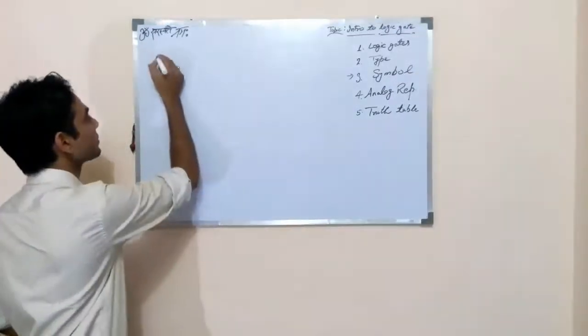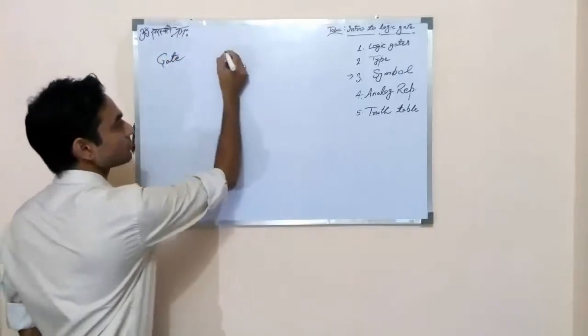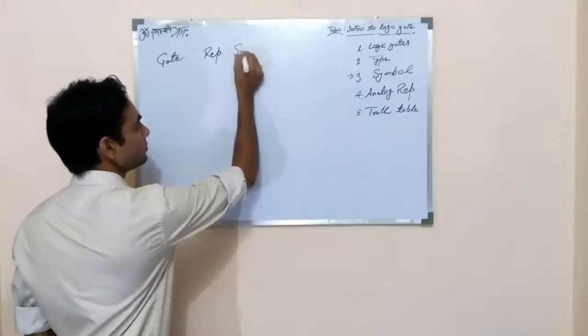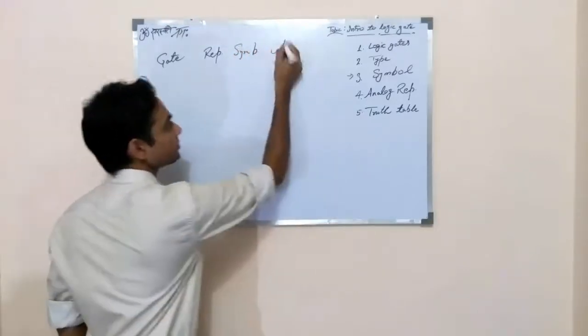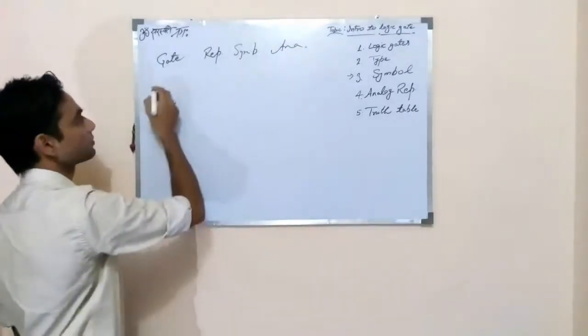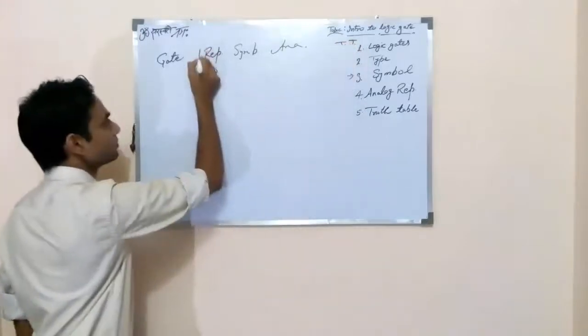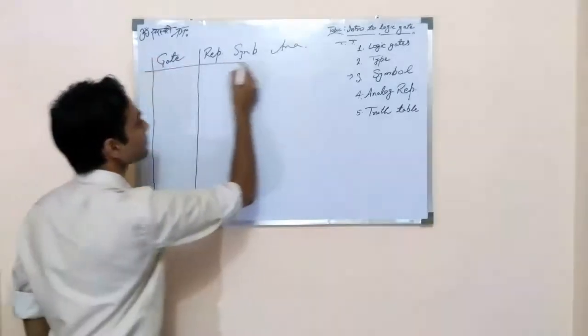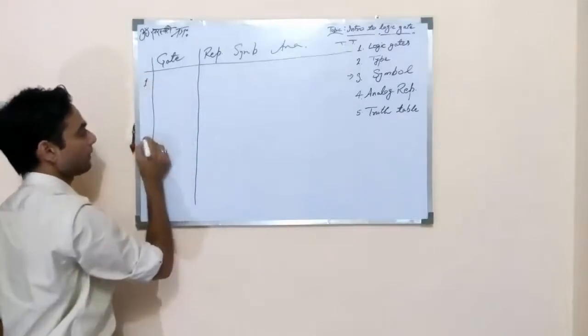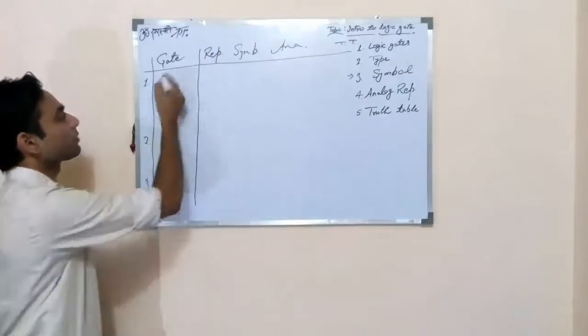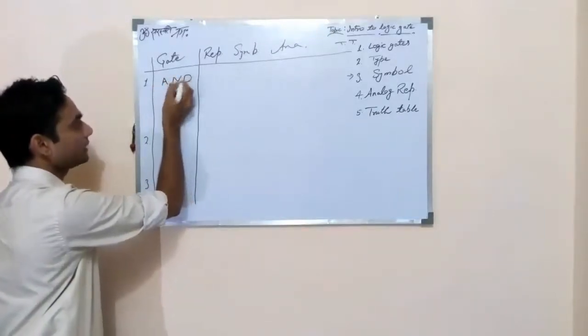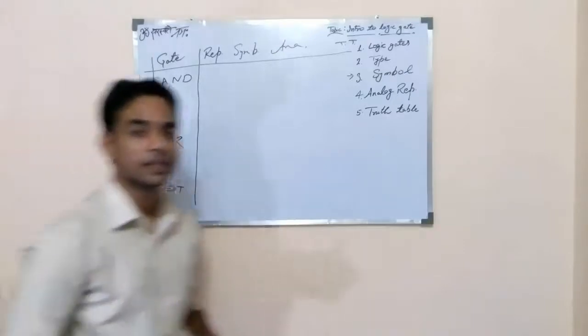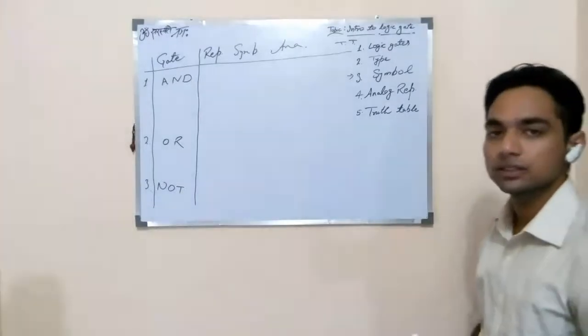So, gate, representation, symbol, analog symbol and TT. First, second and third. So, AND gate, OR gate and NOT gate. These are three types of gates, which are you can say basic gates of this topic.